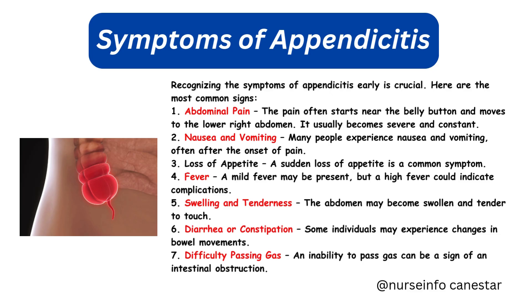5. Swelling and tenderness: The abdomen may become swollen and tender to touch. 6. Diarrhea or constipation: Some individuals may experience changes in bowel movements. 7. Difficulty passing gas: An inability to pass gas can be a sign of an intestinal obstruction. If you or someone you know experiences these symptoms, it's important to seek medical attention immediately. A ruptured appendix can cause peritonitis, a life-threatening infection.